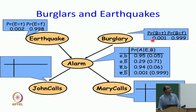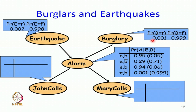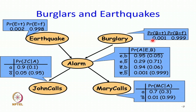So we need 4 parameters for alarm. How many parameters for John? 2 parameters for John and 2 parameters for Mary. Now notice that we have 1, 2, 3, 4, 5, 6, 7, 8, 9, 10 parameters. We have 10 parameters to represent this Bayesian network.